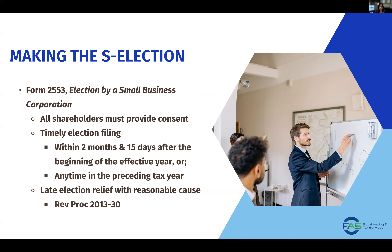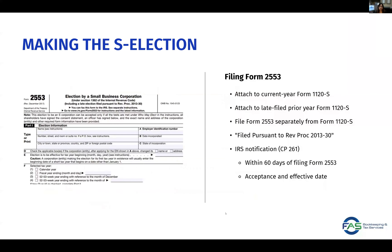There is a timely election filing requirement, which is within two months and 15 days after the beginning of the effective year. If you're not able to file on time, there is late election relief with reasonable cause under Rev. Proc. 2013-30. You either file Form 2553 together with your current year Form 1120-S, attach it to a late-filed prior Form 1120-S, or file it separately. Once the IRS reviews and approves it, you should receive letter CP261 within 60 days, indicating the acceptance and effective date.